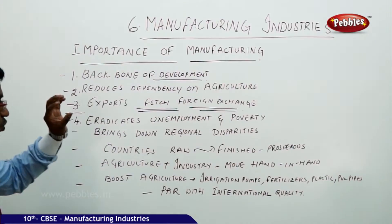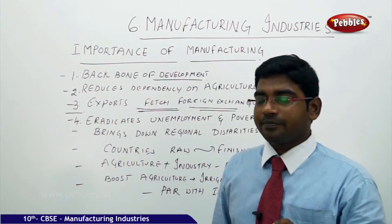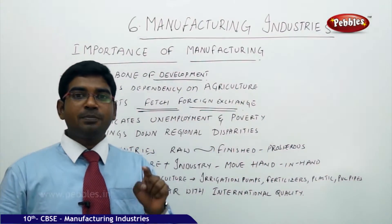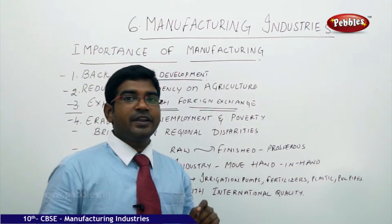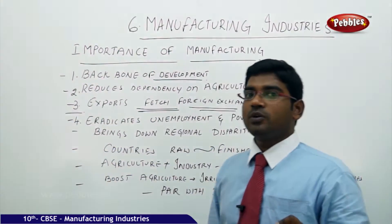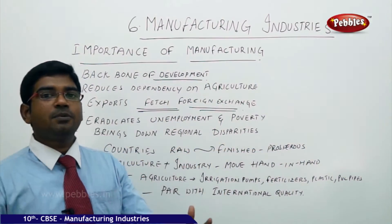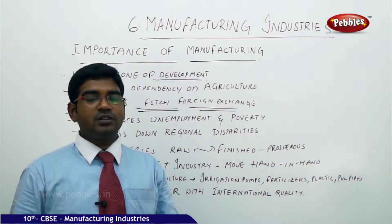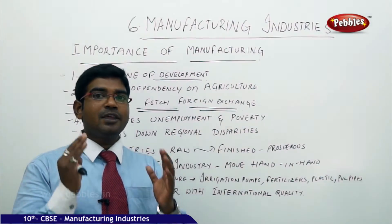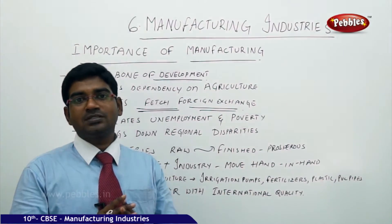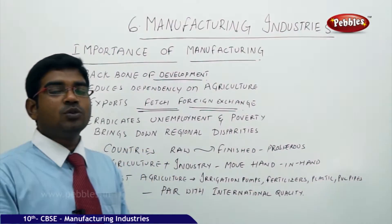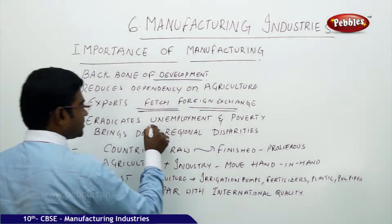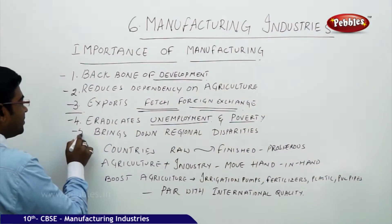The fourth point is that manufacturing eradicates unemployment. In India, the two major problems are unemployment and poverty — because of unemployment, people fall into poverty. If there is an opportunity, people will work hard to achieve it and eliminate their poverty. Developing manufacturing industries gives more unemployed people a chance to work, get employment benefits, and stop falling into poverty.